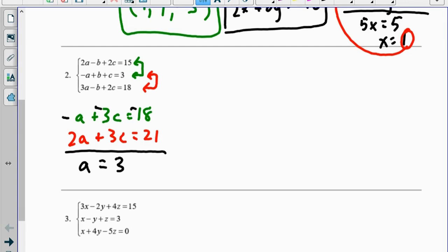Now I work my way backwards. So I take this 3 and I substitute it into one of the new equations that I just got down here. So I had a plus 3c equals 18, and 2a plus 3c equals 21. I'm going to take this 3, substitute it in for a,